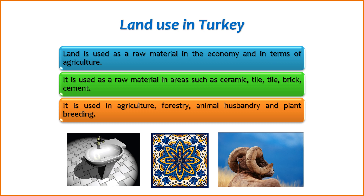Plant breeding: agricultural land is dedicated to plant breeding activities aimed at developing improved crop varieties with desirable traits such as higher yield, resistance to pests, and adaptation to specific environmental conditions. 3. Forestry — Timber production. Forested land is a source of timber and wood products. Sustainable forestry practices are employed to ensure the responsible harvesting of trees for timber without compromising the long-term health of forest ecosystems.